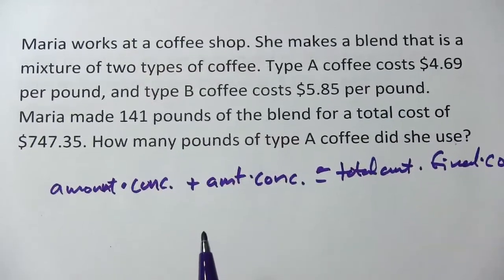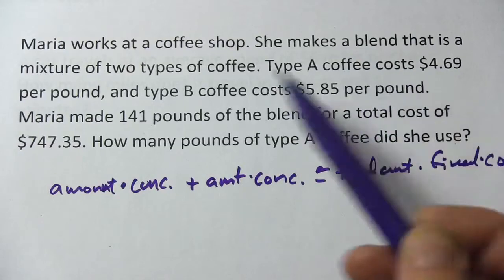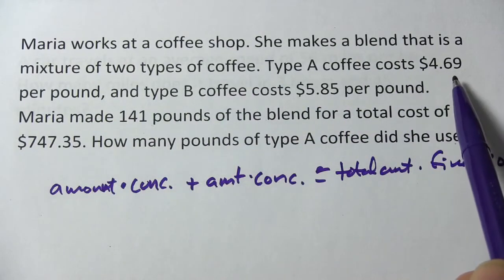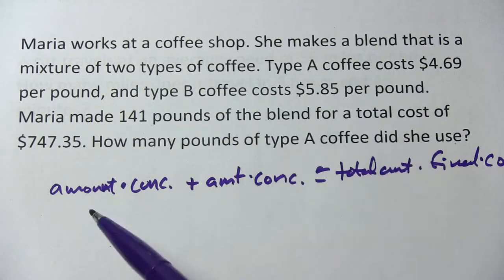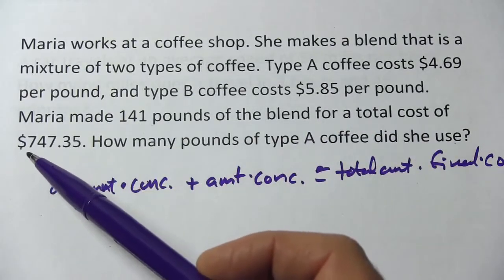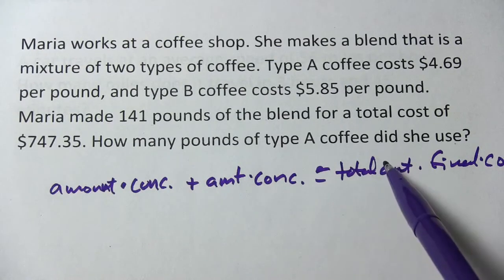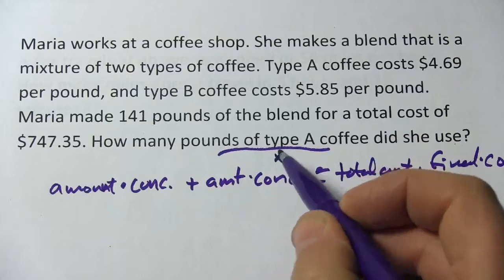Let's read the problem first so we know what we're talking about here. It says Maria works at a coffee shop. She makes a blend that is a mixture of two types of coffee. Type A costs $4.69 per pound and type B costs $5.85 per pound. Maria made 141 pounds of the blend for a total cost of $747.35. How many pounds of type A coffee did she use? So the amount of type A is our X.